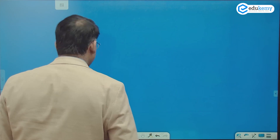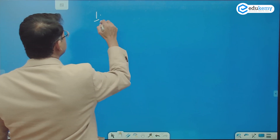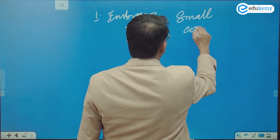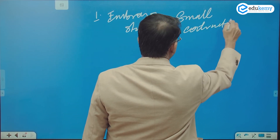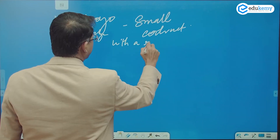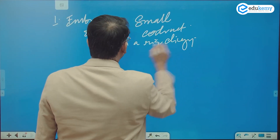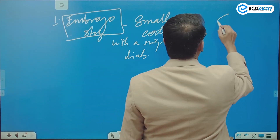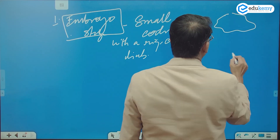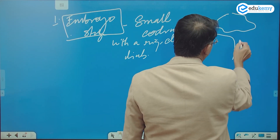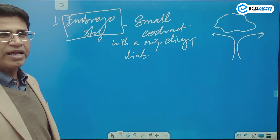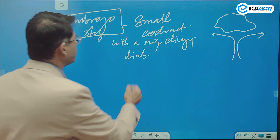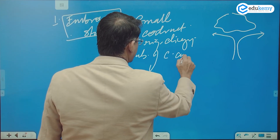The first stage is the Embryo Stage. We have a small continent with a rising, diverging limb of a convection current beginning to form beneath it.